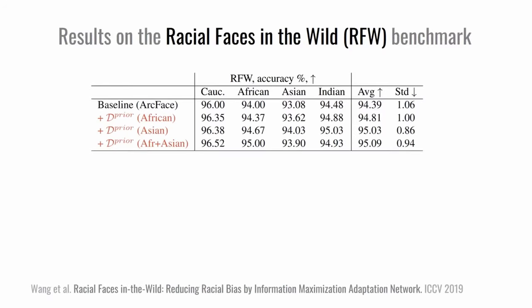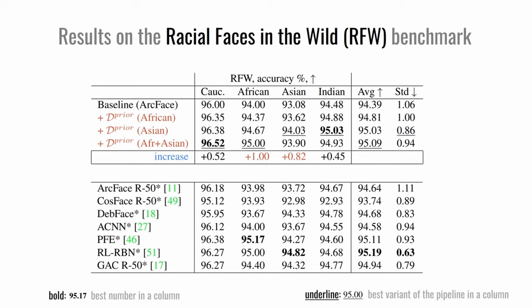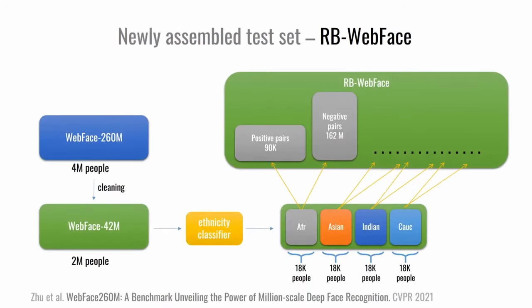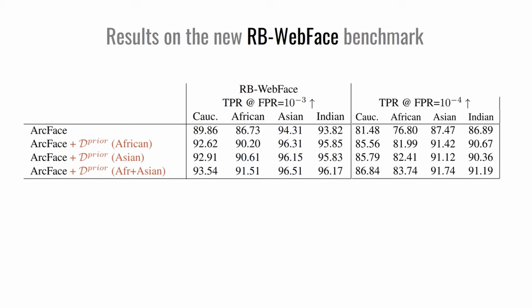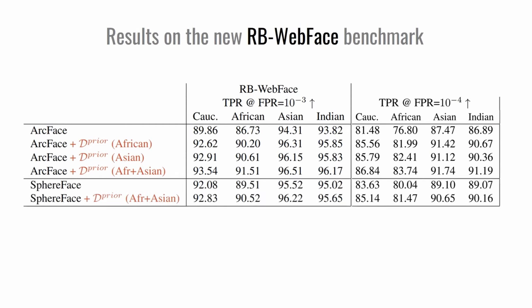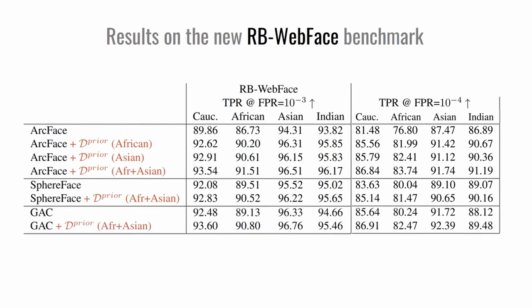We demonstrate the effectiveness of our pre-training technique on the standard RFW dataset. The highest quality increase is observed when all available prior data is used. Accordingly, the baseline with our enhancement performs on par with other fairness-concerned state-of-the-art methods. Our dataset features six times the number of people compared to RFW and is free of potential selection bias. Since RBWebFace is a more challenging benchmark, the same comparison shows the quality difference in a more expressive fashion. This implies that the proposed pre-training benefits other state-of-the-art pipelines, such as SphereFace and GAC, and hence can be used as an ad hoc improvement of an arbitrary algorithm.